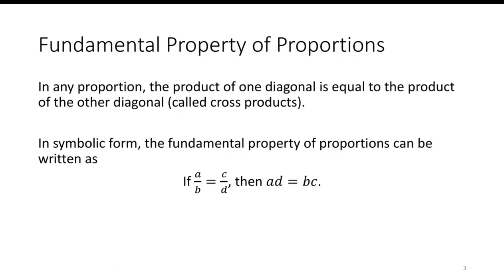In symbolic form, the fundamental property of proportions can be written that if you have two fractions equal to each other, a over b equals c over d, then the cross products are equal. One cross product is a times d, the other is b times c, and so we have a times d is equal to b times c.